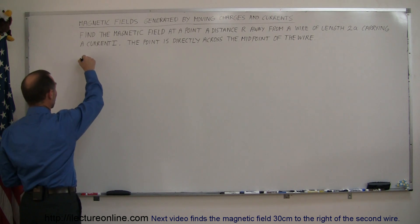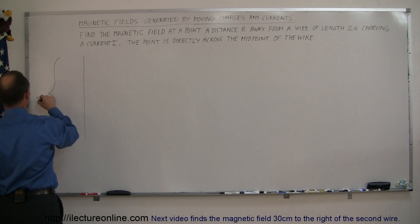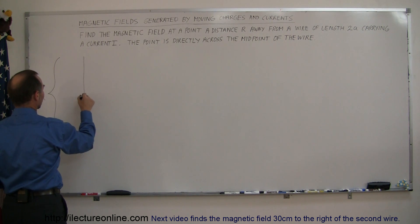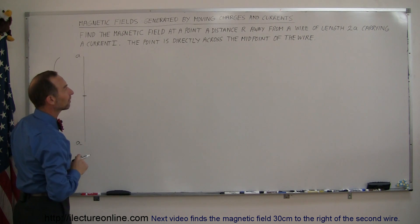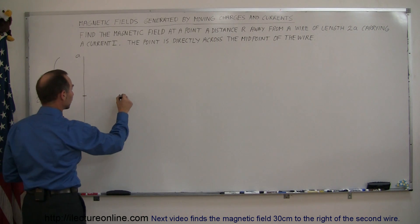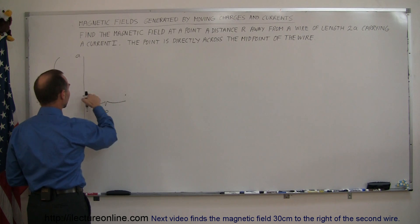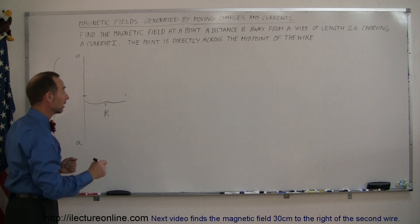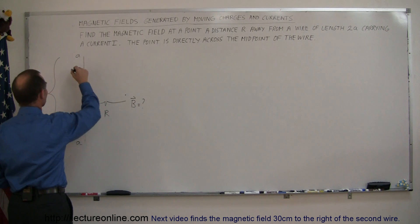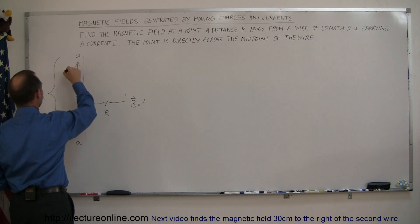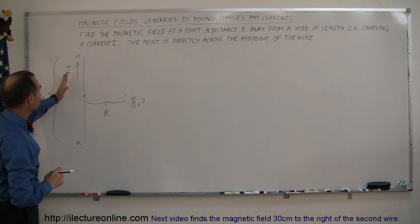Here's our current-carrying wire. The length of the wire is 2a, and here's the midpoint, so the distance from there to there is a, and the distance from there to there is a. We have the point of interest a distance r away from the wire and directly across from the midpoint. The current i flows in that direction.